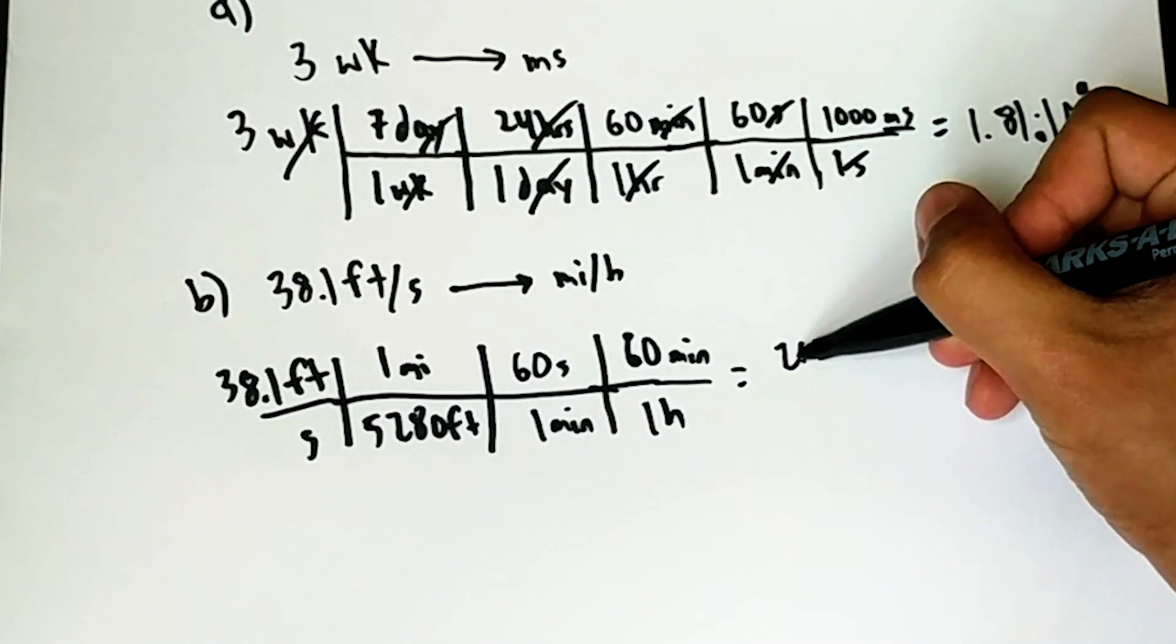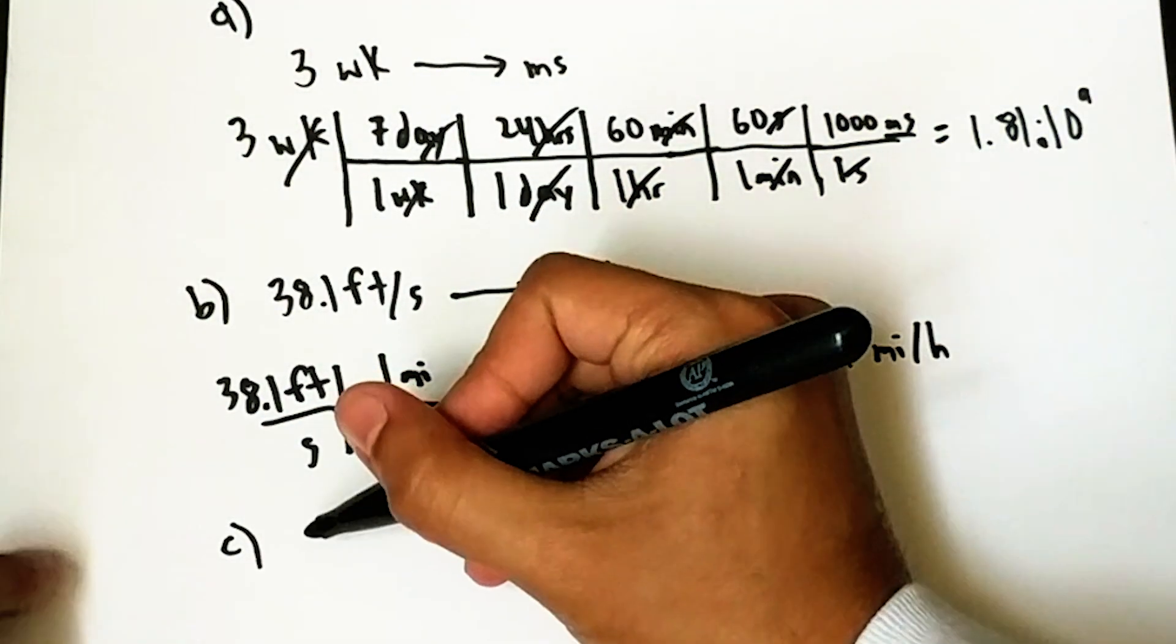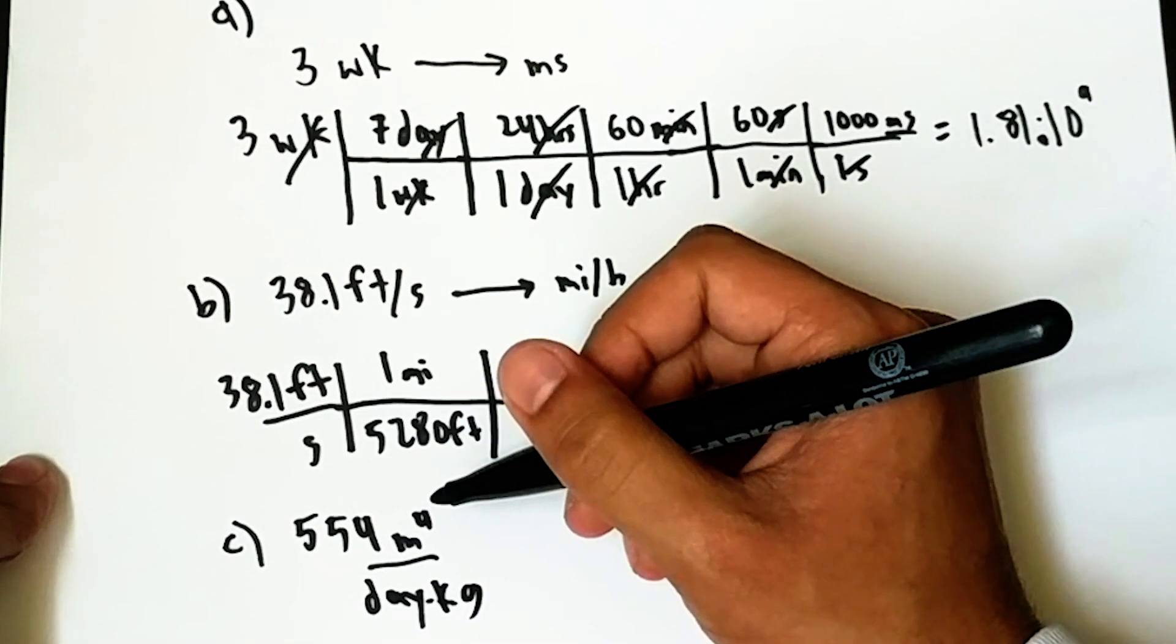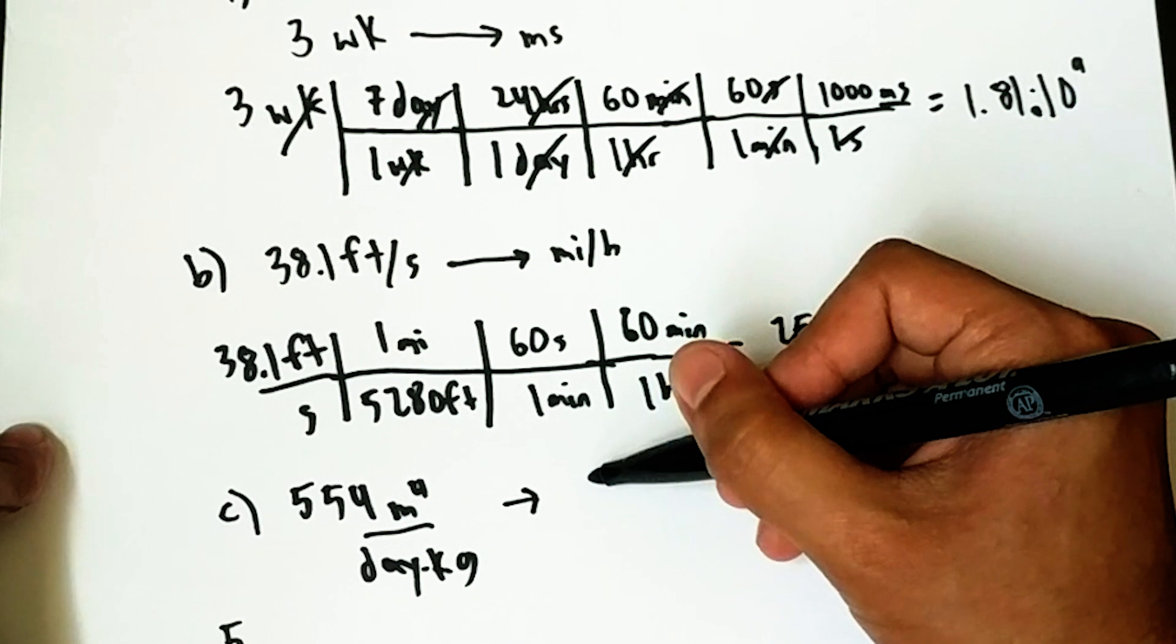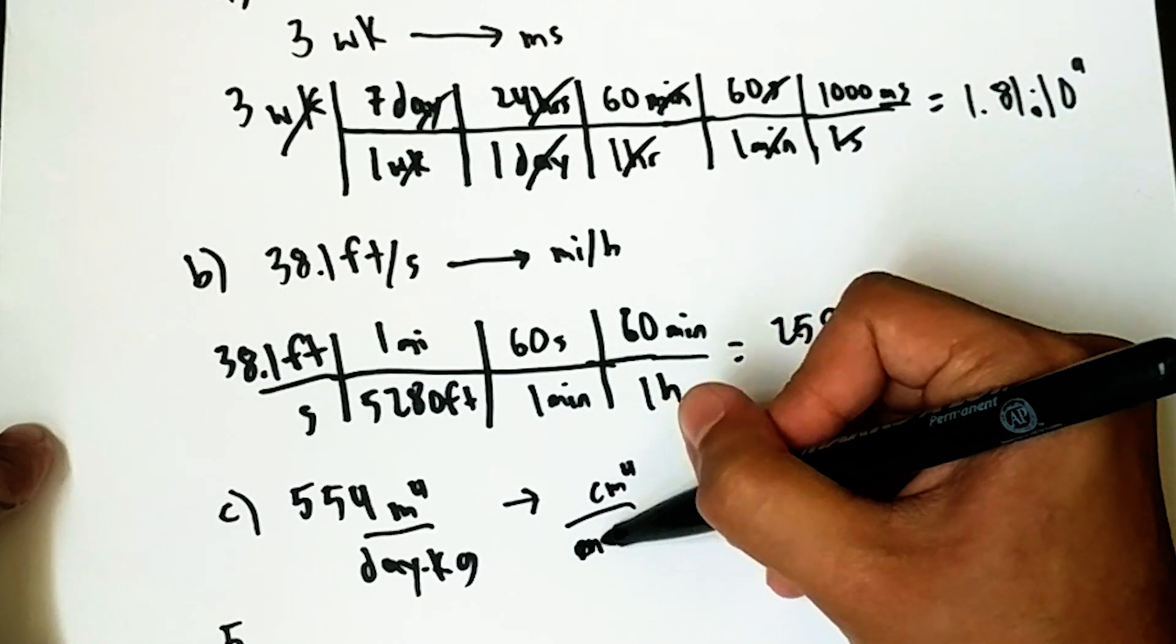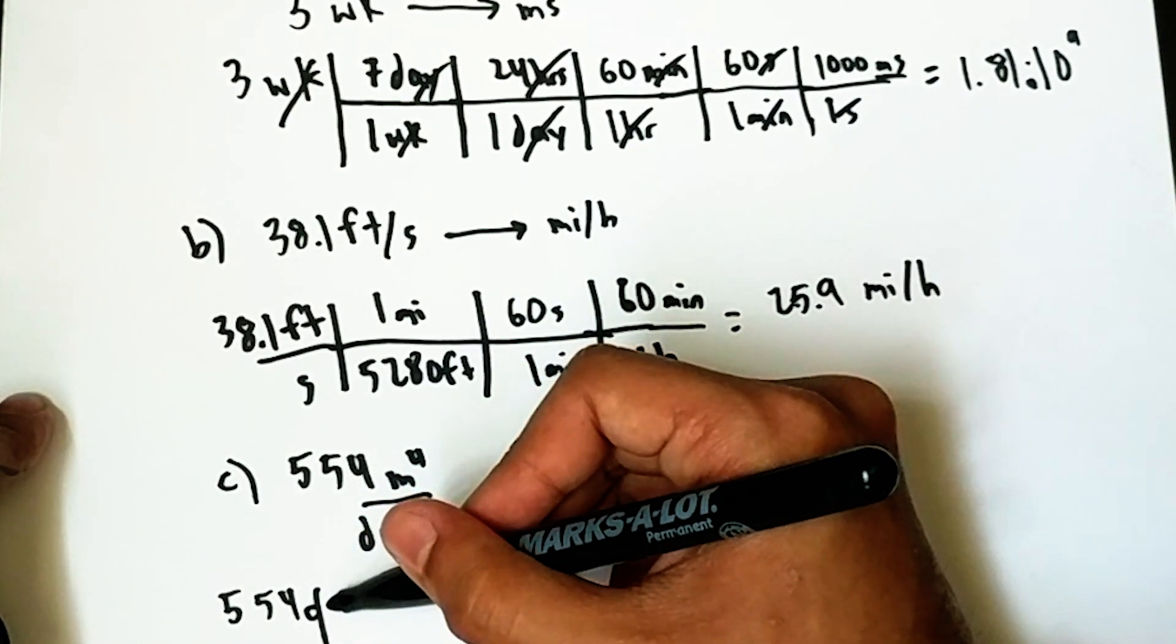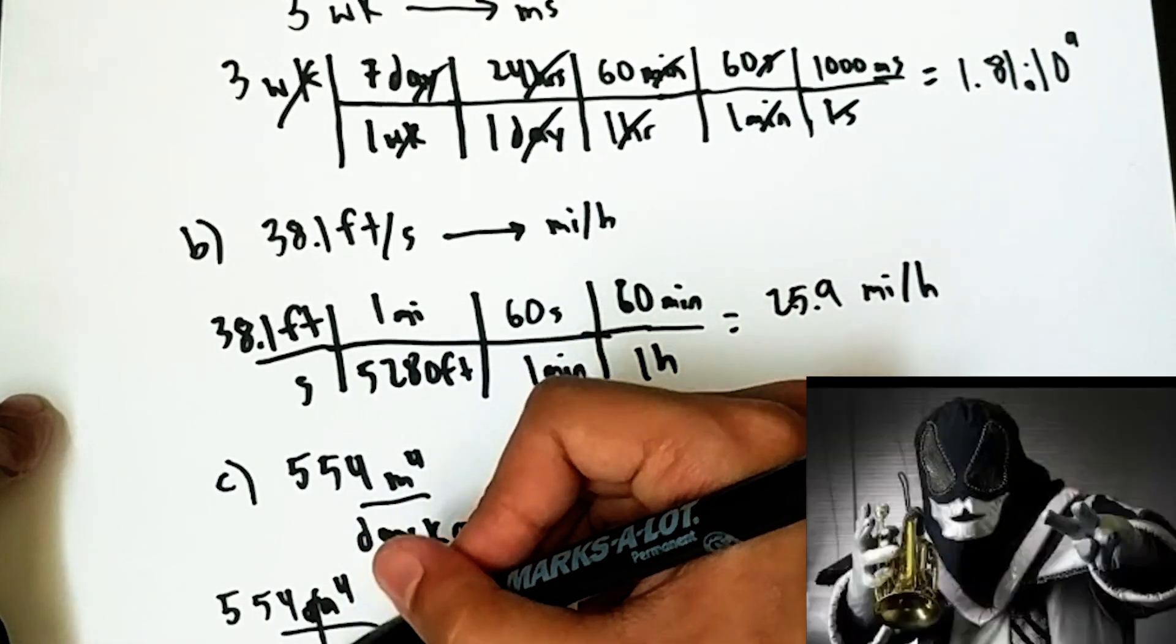And our last little bad boy, we got 554 meters to the fourth per day times kilograms. No big deal. And, this is going to be 2 centimeters to the fourth per minutes times grams. So, 554. Oh, my gosh. See, I already forgot the days. Meters to the fourth. Per days times kilograms. See, that's what I was afraid of.